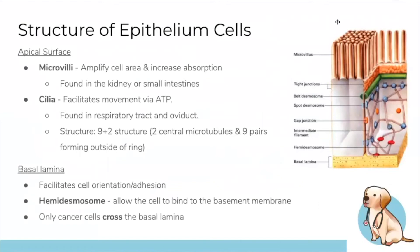Epithelium structure: at the apical (top) surface, you can have microvilli, which increase surface area and are most commonly found in the small intestine where nutrient absorption occurs. Cilia facilitate movement via a sweeping motion and are found in the respiratory tract — sweeping out bacteria and pathogens alongside mucus — and also in the oviduct. Cilia have a nine-plus-two microtubule structure.